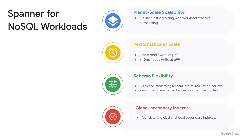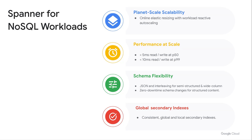We have many Dynamo, Cassandra, and other NoSQL workloads running on Spanner, and it is a great database for building modern, globally distributed applications. Regarding cost, Spanner offers really good price performance for NoSQL workloads — it is up to half the cost of DynamoDB. In a recent paper published by Accenture, this gap widens further when accounting for real workload variations and provisioning.